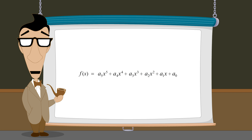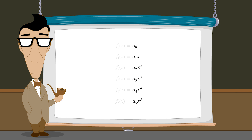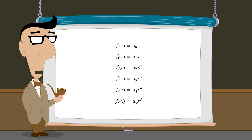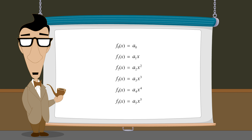If we think of each monomial as a separate function, then a polynomial function can be thought of as a sum of these monomial functions. But how can adding various powers of x produce graphs with such a large variety of shapes?